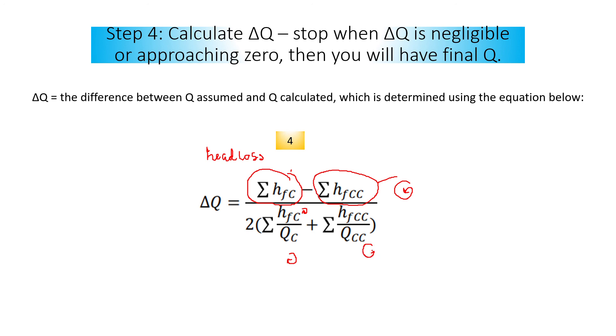This is the summation. If you want to know the derivation of this delta q, you can refer to the notes that I gave you. You can find the explanation from this article on Hardy Cross method. I will show you how we do the calculation in the next video using Excel. See you, thank you, bye.